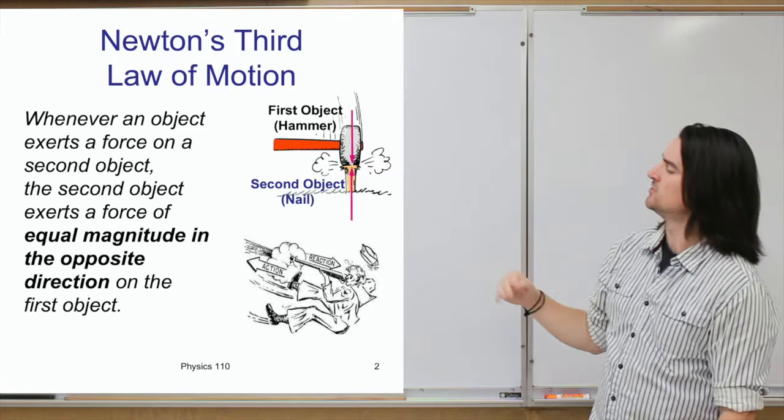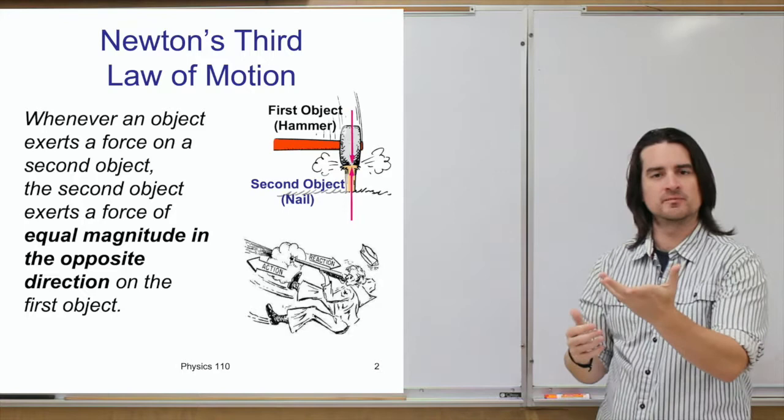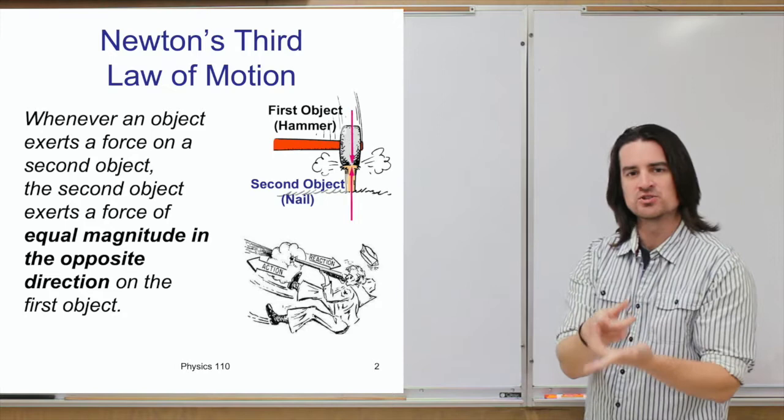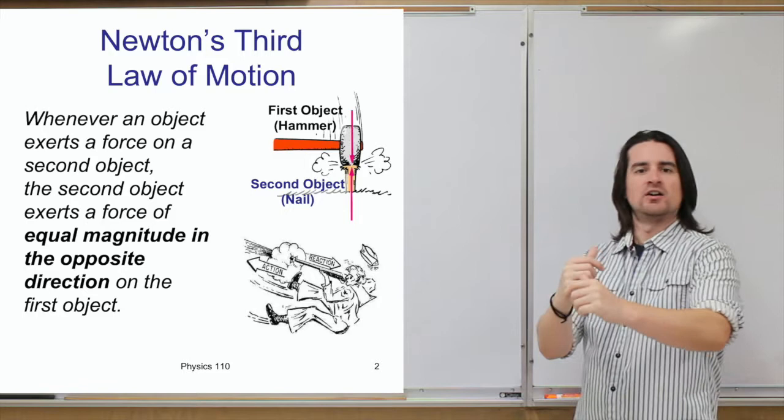Another example is when you fire a rifle or a gun of some sort. There's a force that the gun puts on the bullet in order to shoot it out of the barrel. The bullet then also exerts an equal amount of force in the opposite direction — backwards — on the gun. That's where you have recoil.